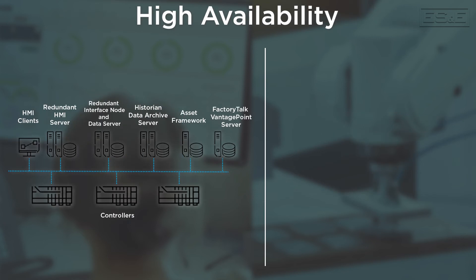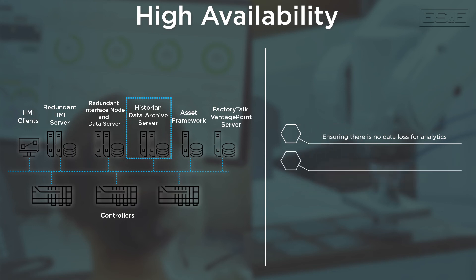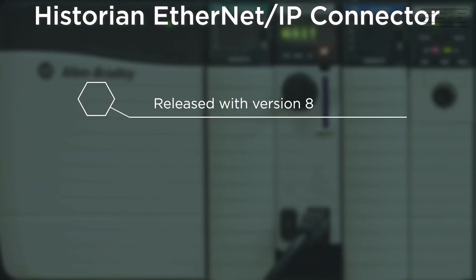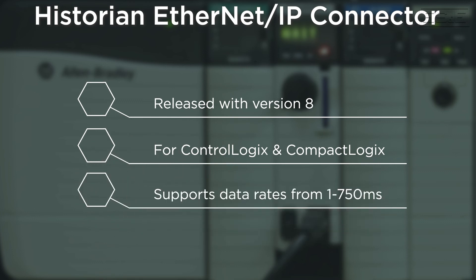We can also take this a step further — not only having redundant interface nodes and redundant data servers, but also redundant historian data archive servers. With redundant interface nodes, we ensure data is not lost and will eventually be available for analytics. With high availability architectures — such as redundant historian data archive servers — we ensure you always have visibility of that data. With version 8 of Historian SE, we've released a new data connector for use with ControlLogix and CompactLogix controllers, supporting data rates of one millisecond to 750-millisecond collection time — a very powerful addition for high-speed data collection applications.